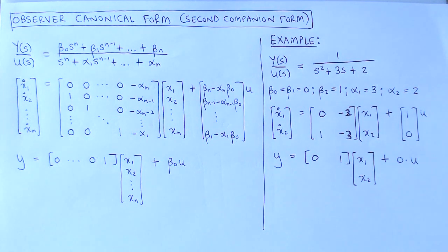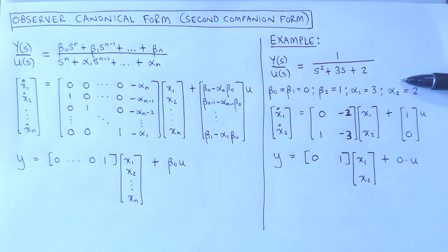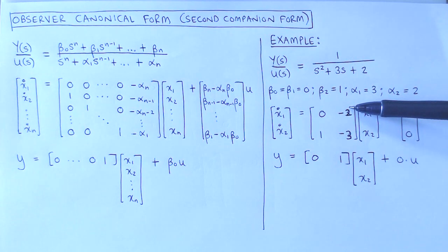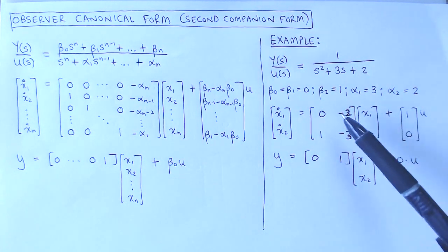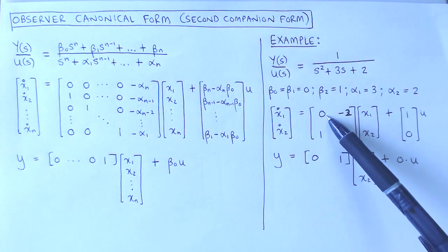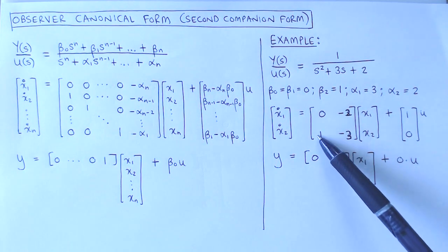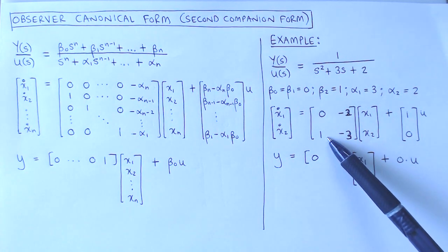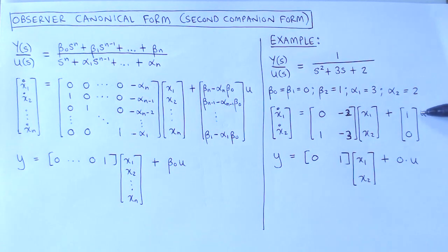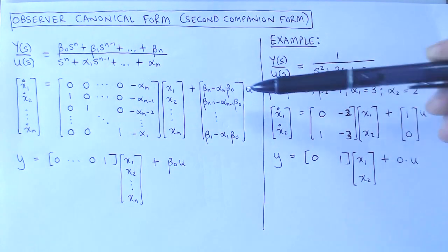Let's take the same example as previously and write down the state variable system in observer canonical form. For the A matrix, the negative alphas are now in the last column. The rest of the first row contains 0, and the left bottom block is an identity matrix, in this case 1. The B vector is calculated from the coefficients as follows.